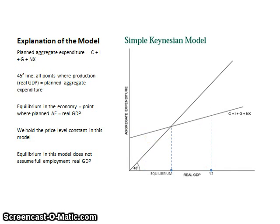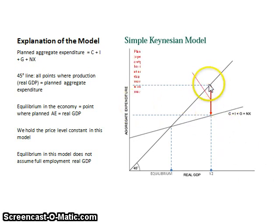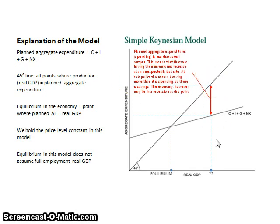At output levels greater than equilibrium, such as at Y2, planned spending is less than total output. Firms are seeing their warehouses build up unexpectedly, meaning they're not selling nearly as much as anticipated. The signal sent to firms, because inventories are building up at an unexpectedly fast rate, is to slow down production, decrease output, and either restrict worker hours or lay people off.